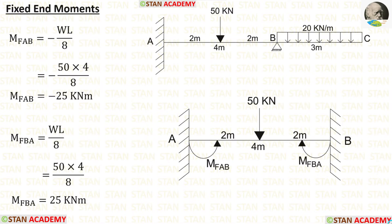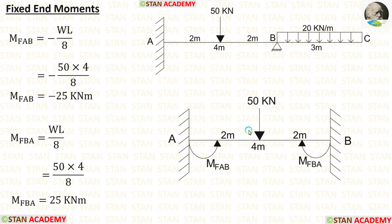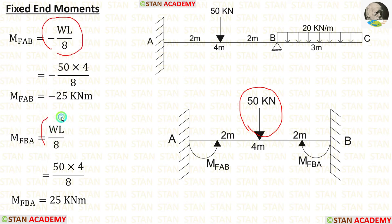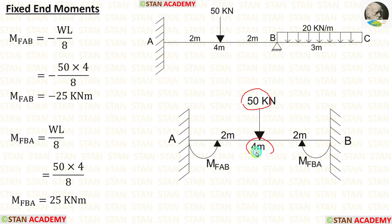Now we are going to find the fixed end moments. There is no need to calculate fixed end moments for the overhanging span; only calculate them for span AB. In span AB, there is a point load of 50 kN acting at the center. The formulas to calculate the fixed end moments are −WL/8 and +WL/8. With W = 50 and L = 4, we get MfAB and MfBA.